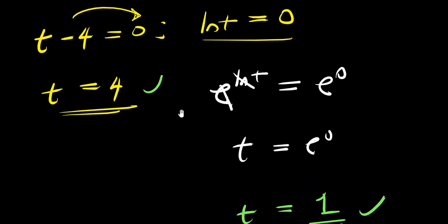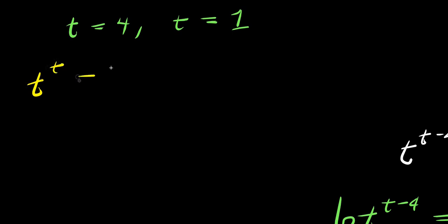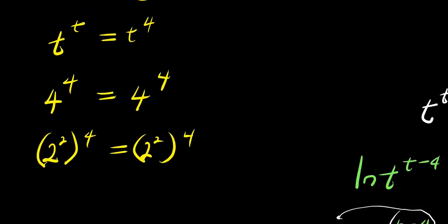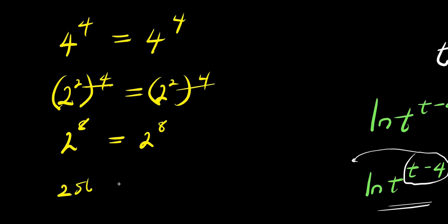Let's verify these solutions in the original equation t to the power of t equals t to the power of 4. For t equals 4: we have 4 to the power of 4 equals 4 to the power of 4. Since 4 is 2 squared, we get 2 to the power of 8 on both sides, which equals 256. Left-hand side equals right-hand side. ✓